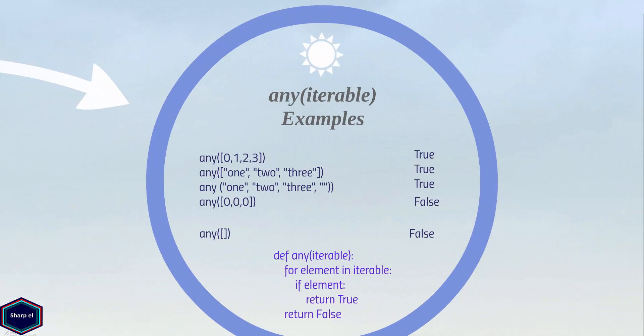Now let's see some examples. In our first, second, and third examples, any function returns true. But if we pass a list with one or more elements with a value of 0, any function will return false.